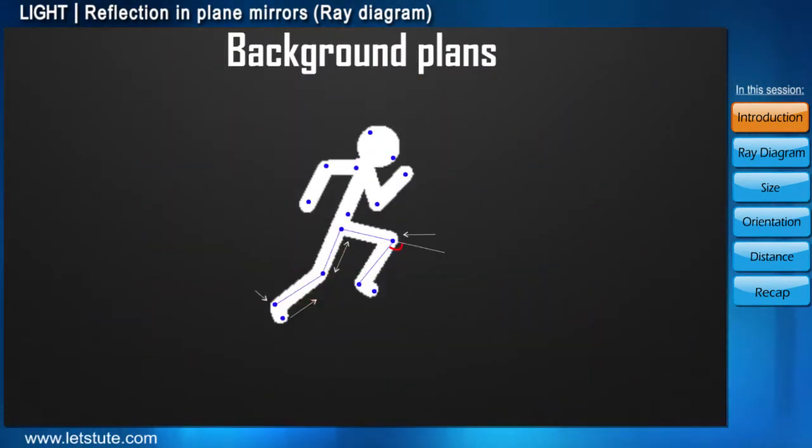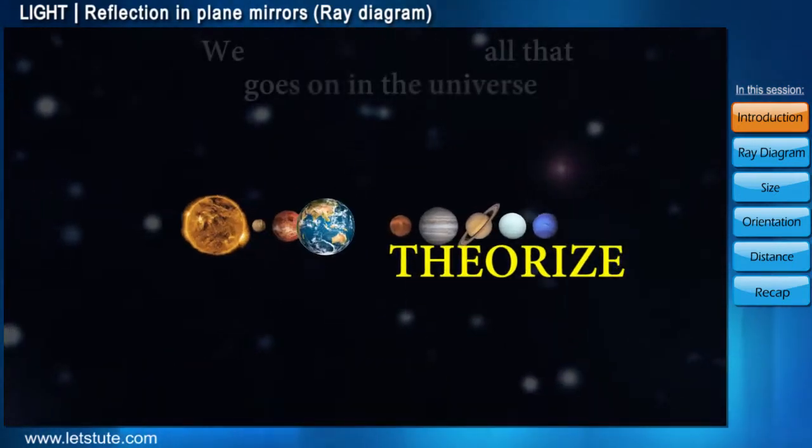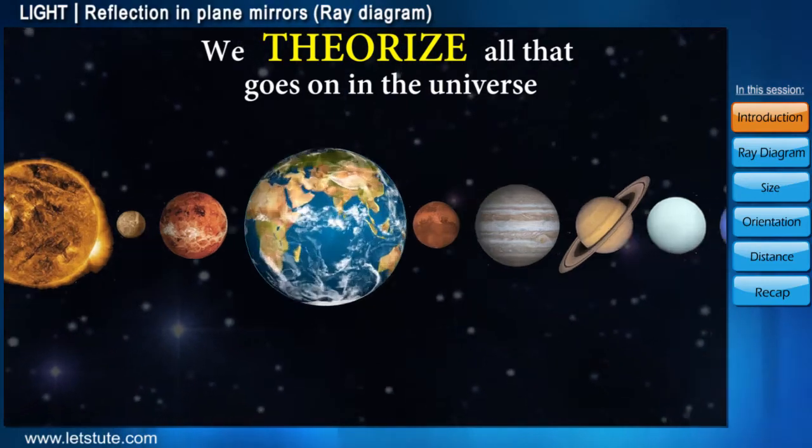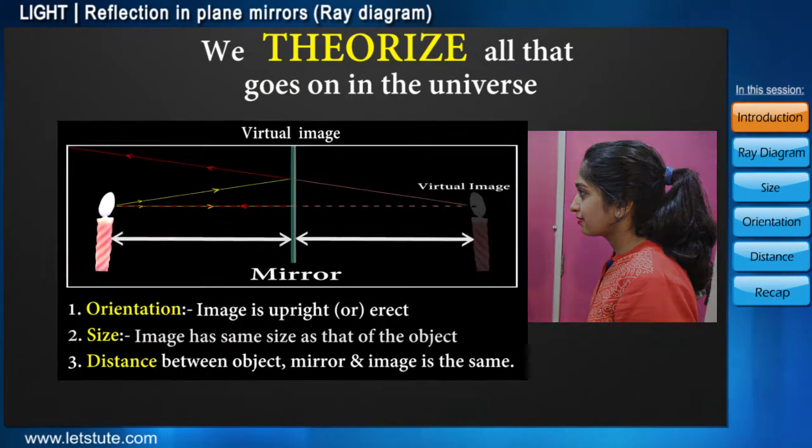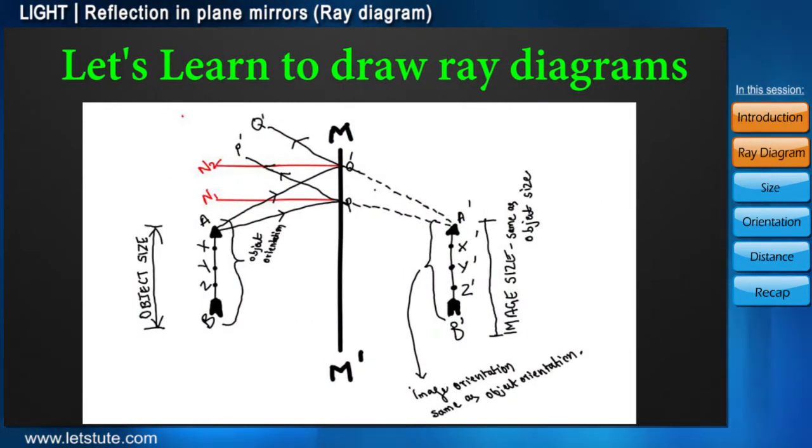These plans are tracked with the help of assumptions or theories. So, we theorize all that goes on in the universe. This is again what we'll do to explain how images are formed in plane mirrors. Earlier, we just saw those ray diagrams. In this session, we'll learn how to make them. Friends, this process is not at all difficult. Let's take it step by step.